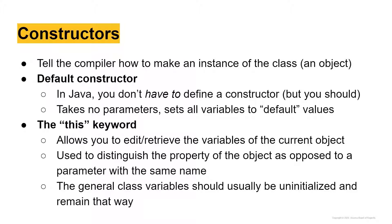The general class variables should usually be uninitialized and remain that way. We want to use the 'this' keyword to distinguish that we are editing or accessing the variable of the object itself — the actual instance — and not the generic class variable, because we don't want to mess with those uninitialized variables.